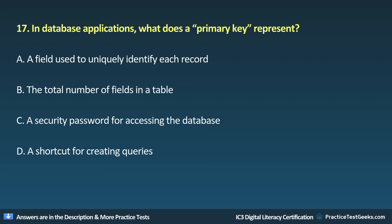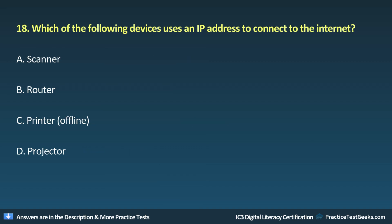Question 17: In database applications, what does a primary key represent? A. A field used to uniquely identify each record. B. The total number of fields in a table. C. A security password for accessing the database. D. A shortcut for creating queries.